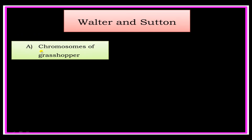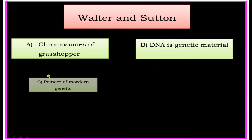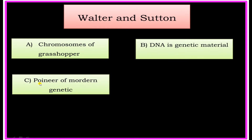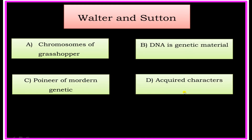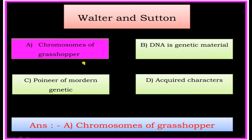Walter Sutton. Options: A) Chromosomes of Grasshopper, B) DNA is genetic material, C) Pioneer of Modern Genetics, D) Acquired Characters. The answer is: Chromosomes of Grasshopper.